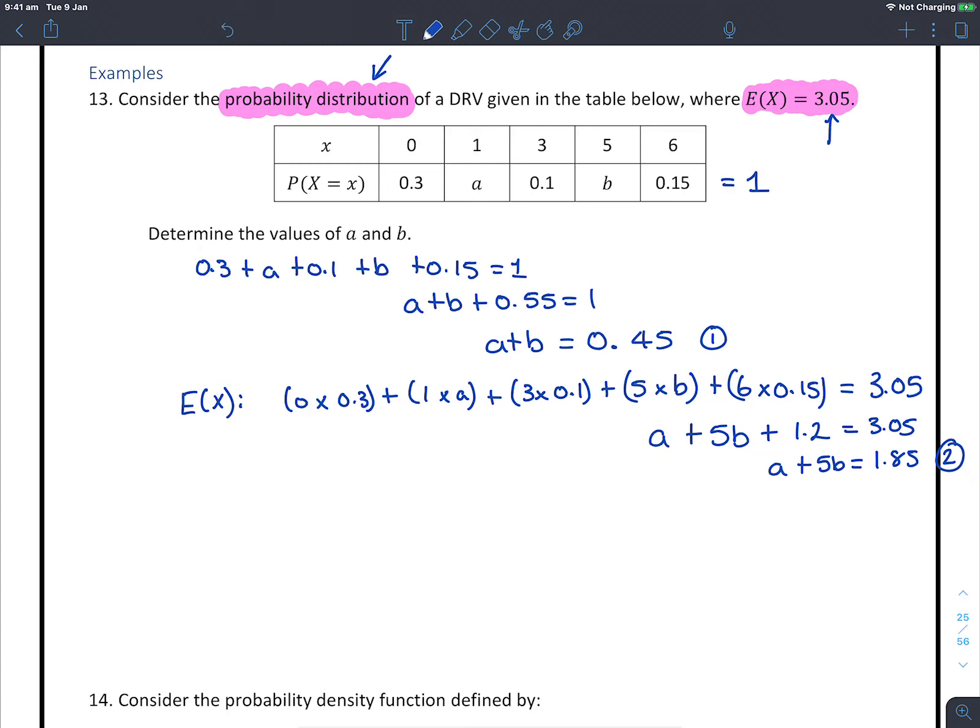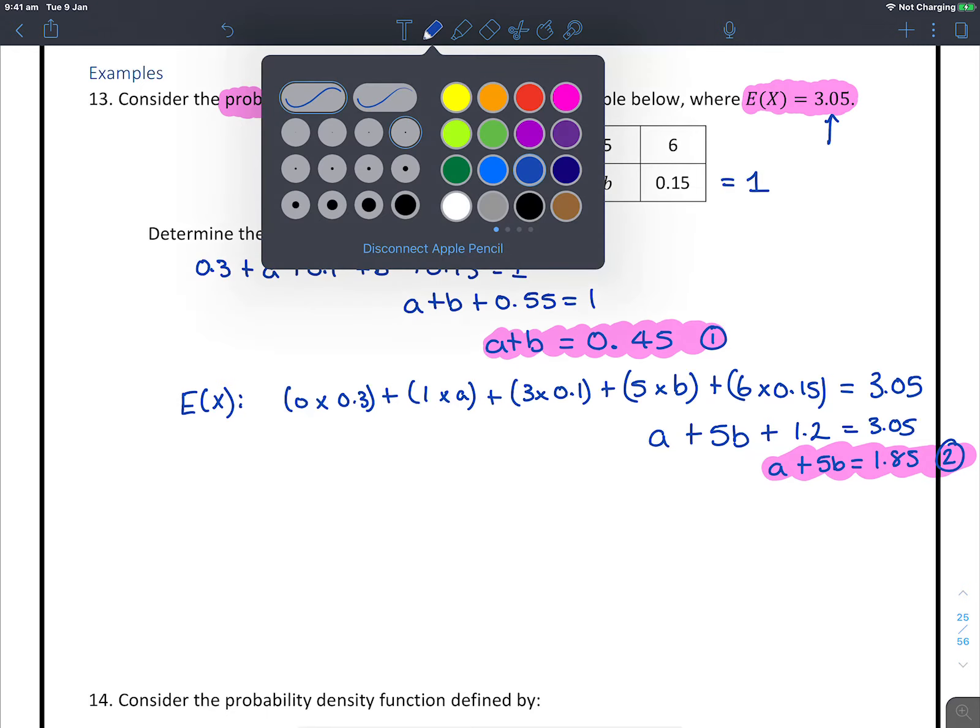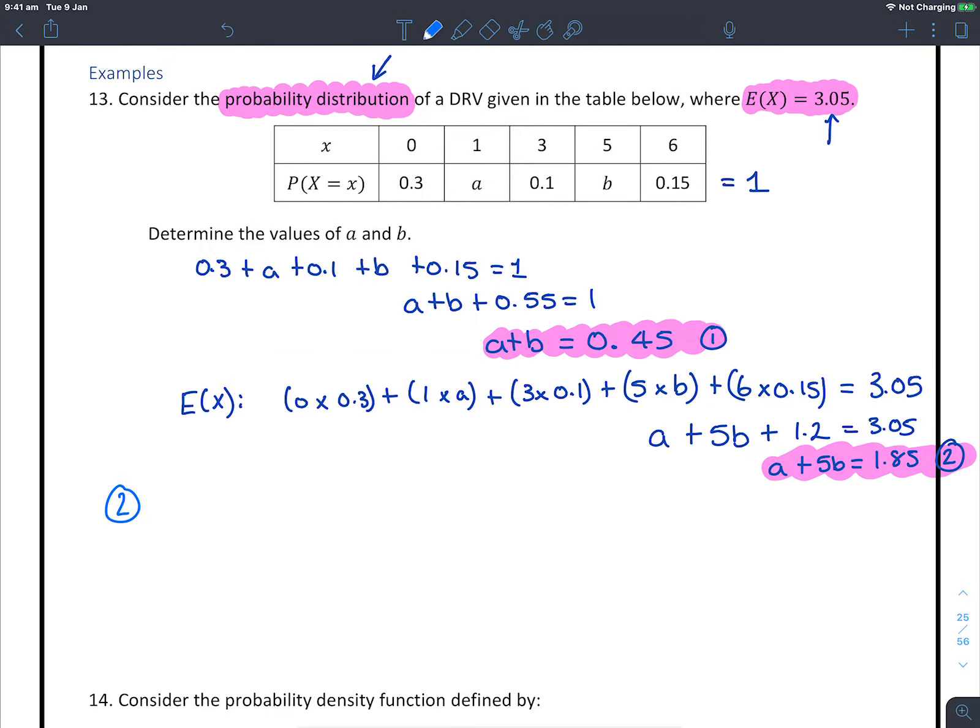That's getting pretty messy but there's my equation 2. I'll just highlight them so we can see them nice and clearly. So now I have two equations. Looking at my two equations, something nice and easy has appeared. They both have the exact same a. So because they've both got the exact same a, I'm going to do equation 2 minus equation 1.